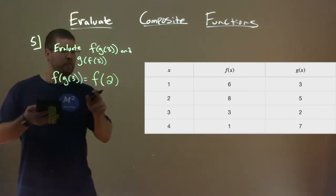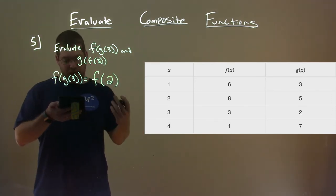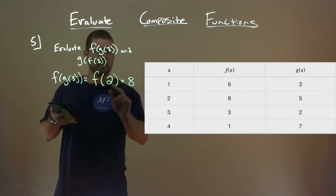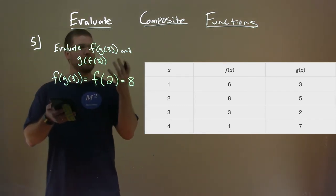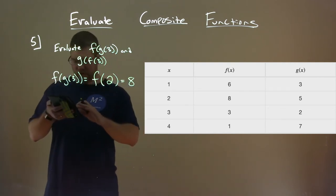Then from there, we have f of 2, so when x is 2, what's f of x, and that is 8. So we plug 2 then back in for the x value, or 2 is our x value, and that gives the output of 8 for f of x. And there we have it right there.